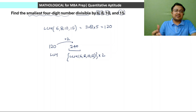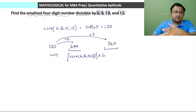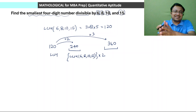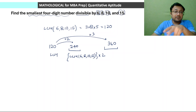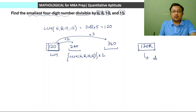If you multiply the LCM by 3, we get 360, which is another multiple of all these numbers, divisible by all. Basically, any multiple of LCM is divisible by all the numbers. LCM is the least such multiple. Any multiple of the form 120K is divisible by all of 6, 8, 10 and 15.